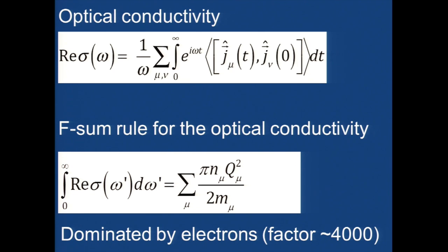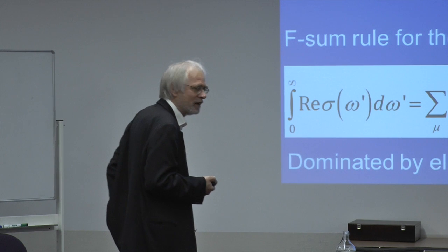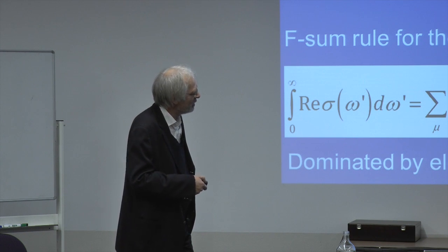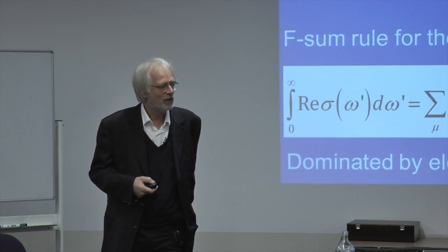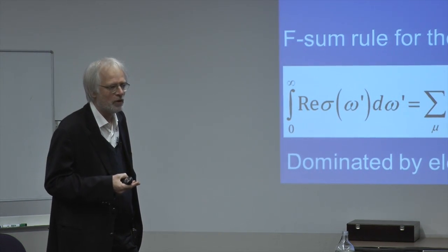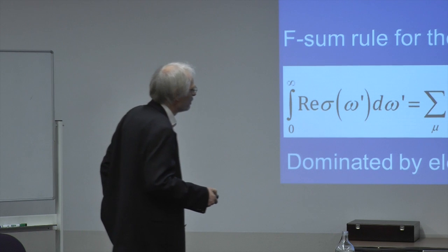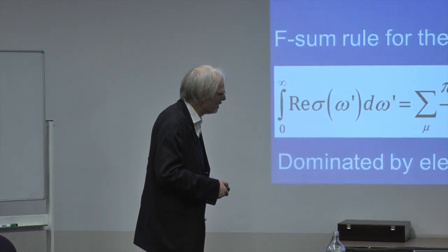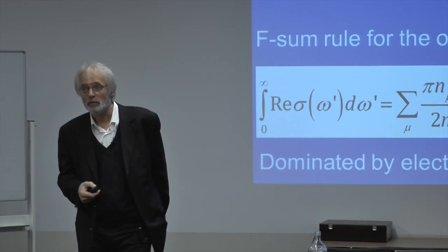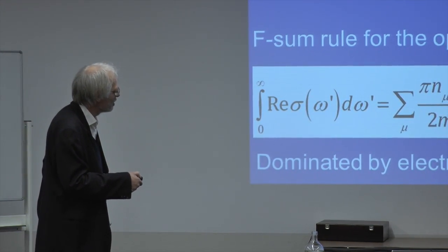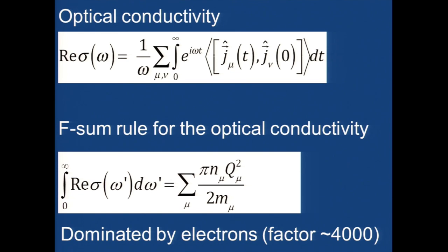The F-sum rule: there's a universal pre-factor of π/2, a mass factor depending on the mass of each particle in the denominator, the charge of the particles, and the number density of each particle of type μ. If there are neutrons in your system, you wouldn't see them because they have no charge. If you apply this formula to lithium or any solid with electrons and nuclear particles, the nuclear particles are about 1,800 times heavier than an electron, and typically you have about two nuclear particles per electron. So the mass involved in the nuclei is 4,000 times bigger than in the electrons — which goes in the denominator, making nuclear contributions 4,000 times smaller. This here is vastly dominated by the electronic contribution.